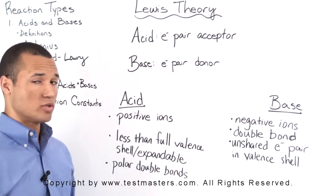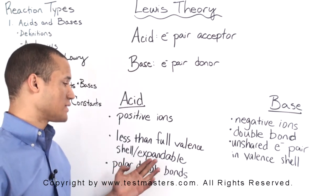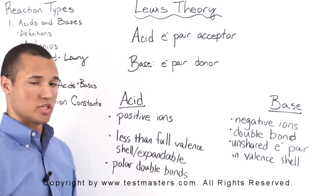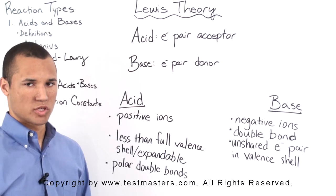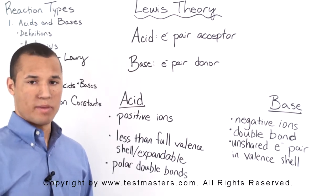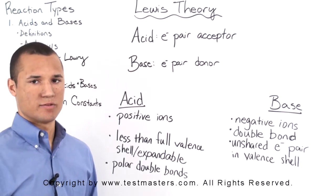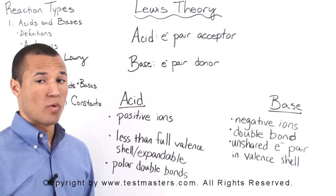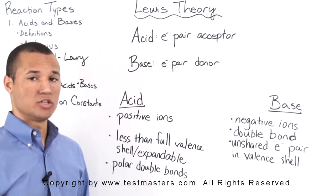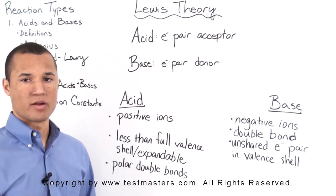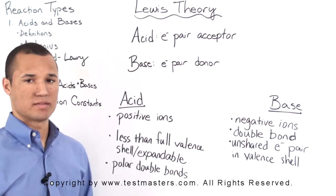Likewise, when dealing with valence shells, a less than full valence shell or an expandable valence shell can accept a pair of electrons and act as an acid, while any atom or molecule that has an unshared pair of electrons in its valence shell can serve as a base.